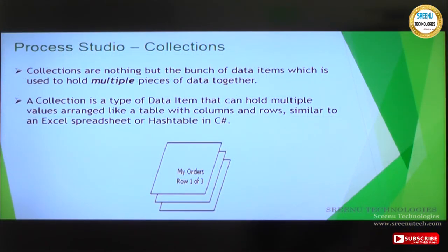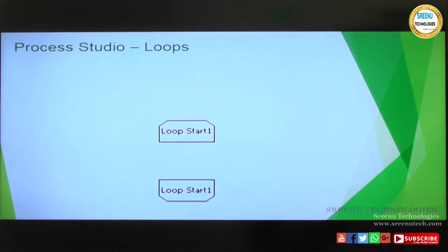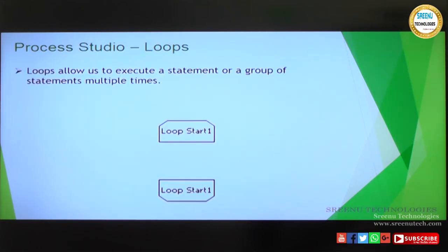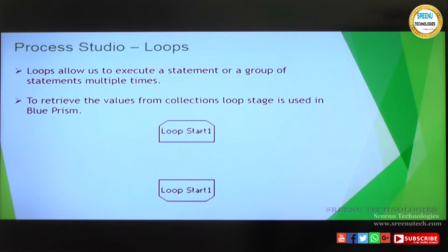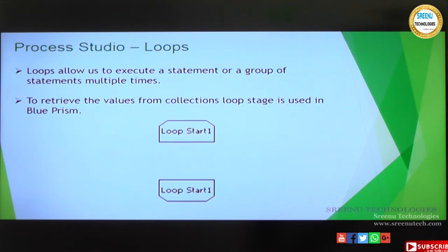A loop is a stage using which you can retrieve each value from a collection. Circular path and loop are different. Circular path is when you want to iterate the same steps multiple times. Loop is when you have a collection entity with multiple records and you want to process each record - going through each row one by one. That is the difference. Don't get confused between loop and circular path.